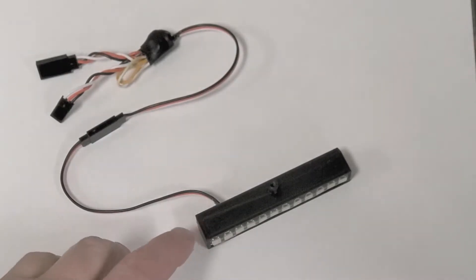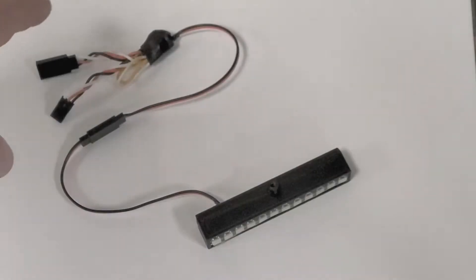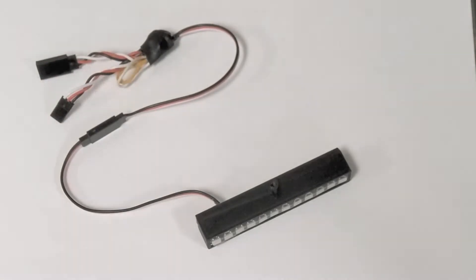And then you'd probably want to put a dab of shoe goo or something on either end to secure it there. There's the controller. So it plugs in between your speed control and your receiver. So it's monitoring the throttle signal.